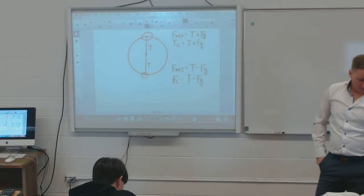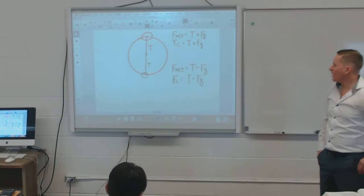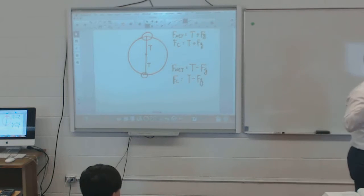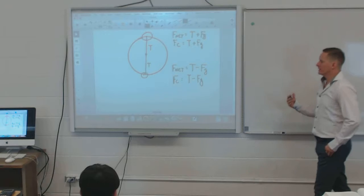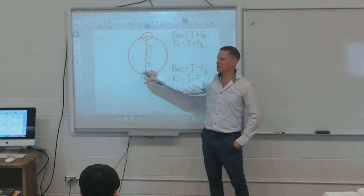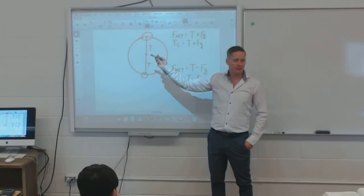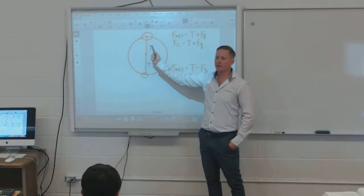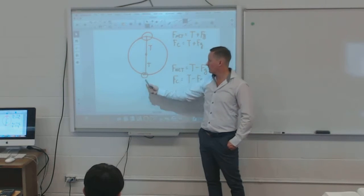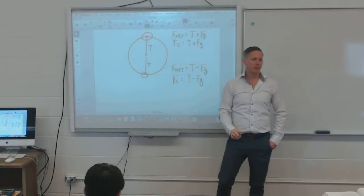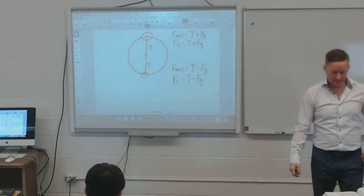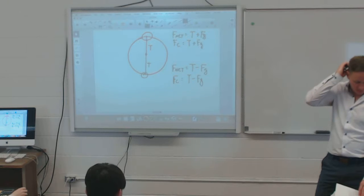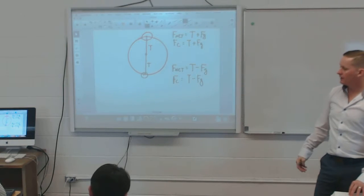When solving this, the book adds positives and negatives, but I prefer to look at net force direction. At the top, gravity works with the tension, pulling toward the center. At the bottom, gravity tries to pull it away from the center while tension pulls it back to the middle. I do this slightly differently from the book, but it's consistent with what we've done so far.